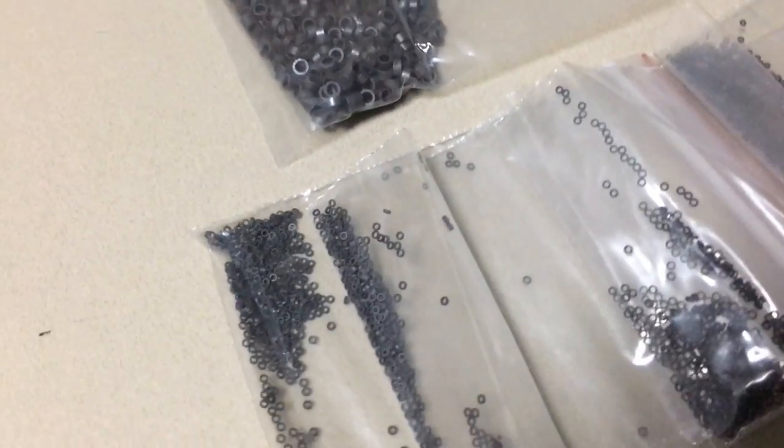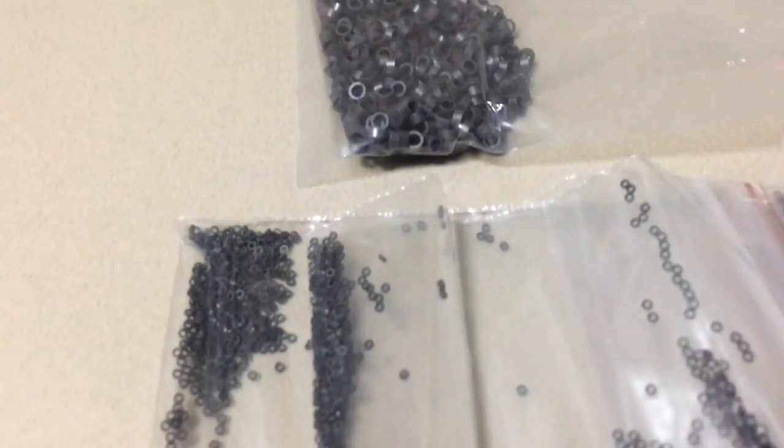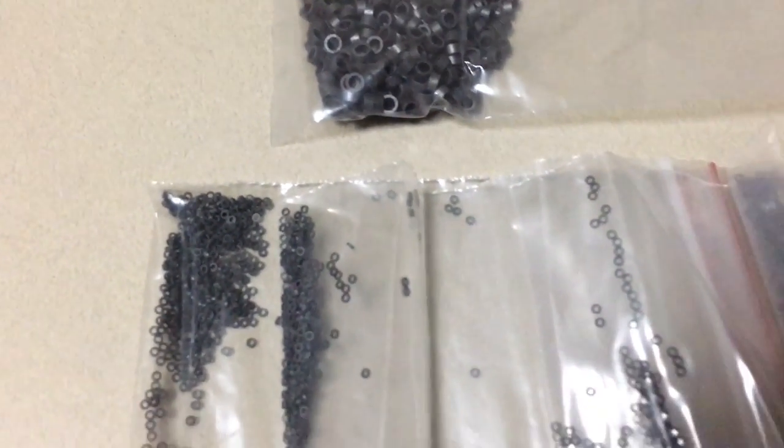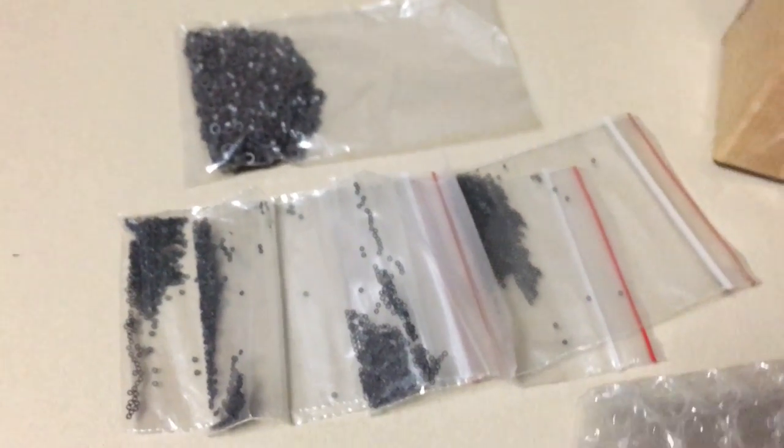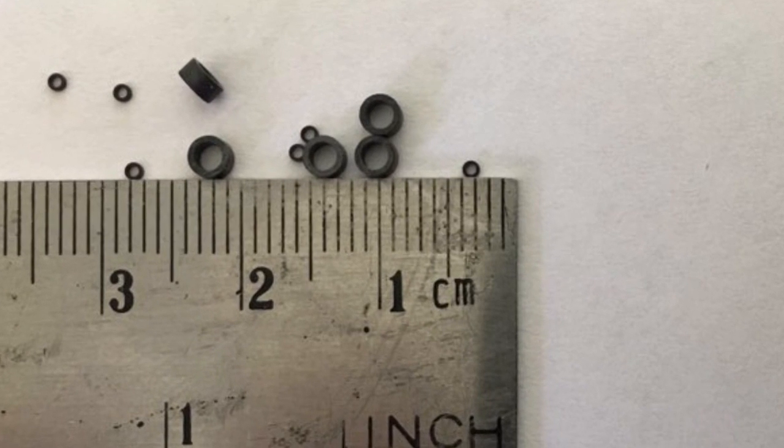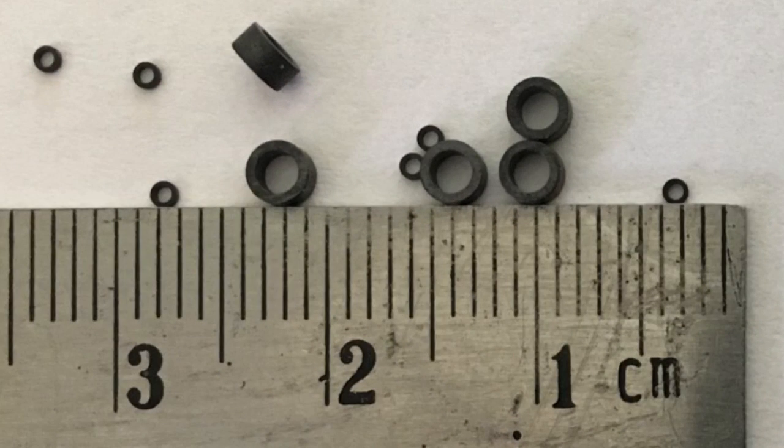I got two different types of square loop ferrite from eBay back when I was doing the Core RAM project. Their lack of availability is the one thing that could prevent anyone coming along and reproducing this project. I used the smaller 1mm diameter cores for the Core RAM project and the larger ones for this project, which I never was sure was square loop ferrite until now.